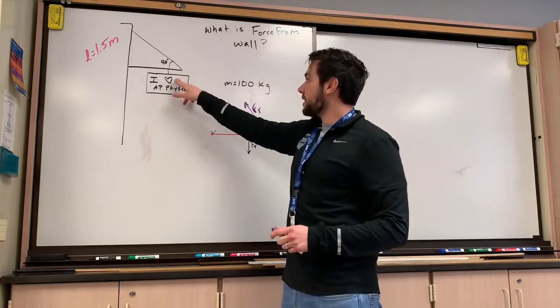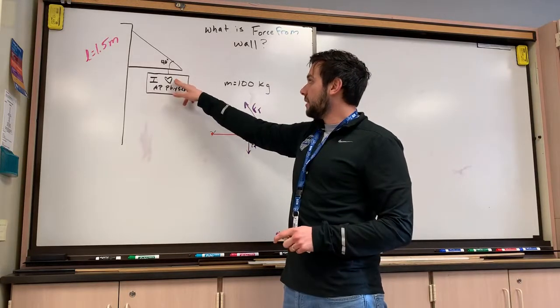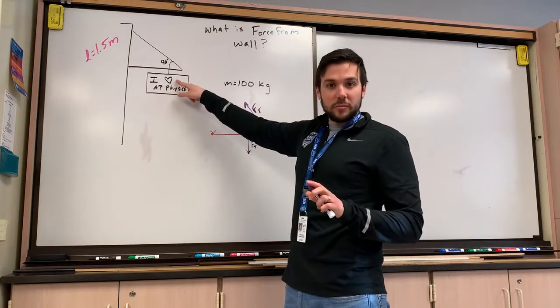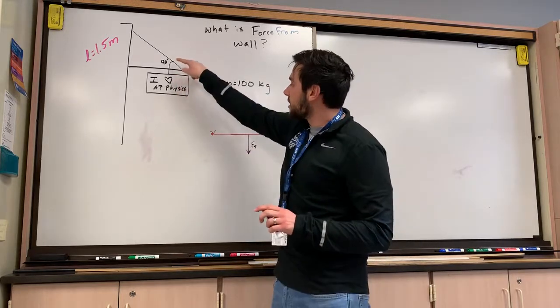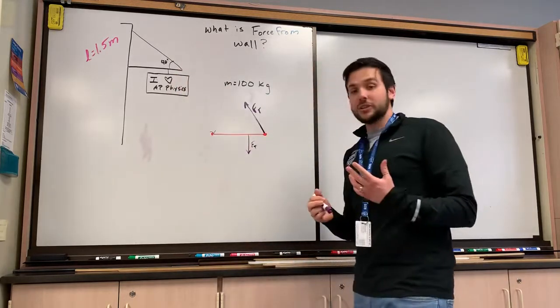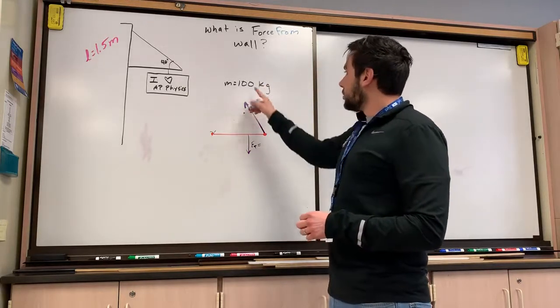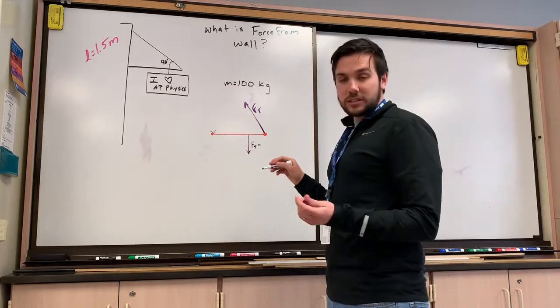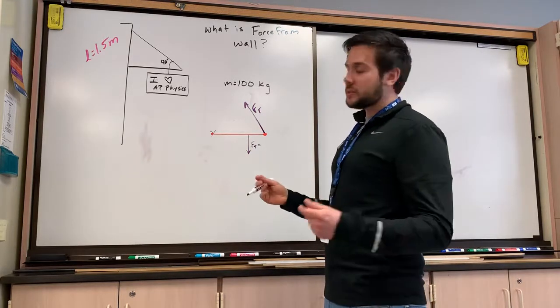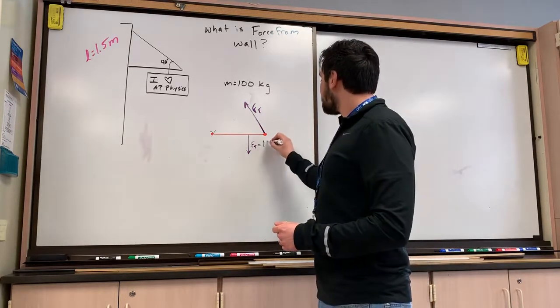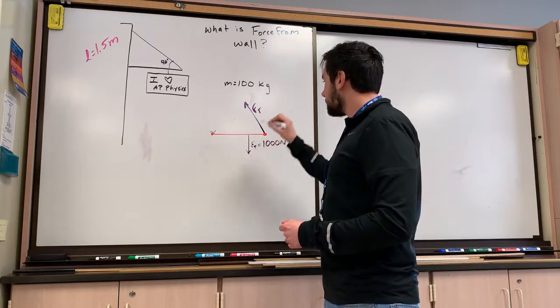If we're looking at the force of tension that's coming from the sign, we know the sign is in equilibrium, right? So the force of gravity on the sign and the force of tension on the sign has to be equal to each other. So in this case, we know our force of tension has to equal 100 times our acceleration due to gravity. And these problems, I'm going to call it 10. So our force of tension here is 1000 newtons.